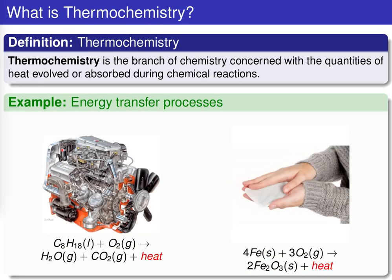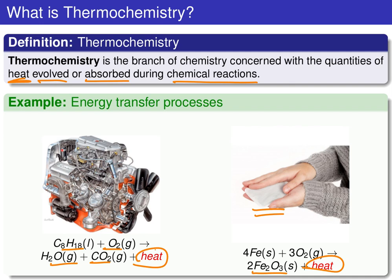With thermochemistry, we're looking at a subset of thermodynamics, and one of the core questions we are going to be looking at is essentially trying to quantify and predict energy or heat that is evolved, given off, or absorbed during the course of chemical reactions. For example, if you burn octane, you get heat as a byproduct — energy is released. Similarly, when you form the iron oxide compound used in hand warming devices, heat is given off. What we want to do in this chapter is develop tools and principles to help quantify and understand those energy change processes.